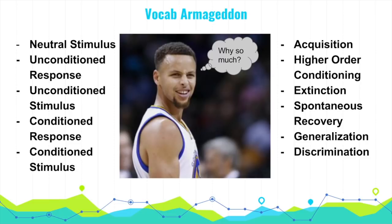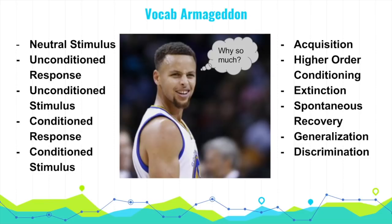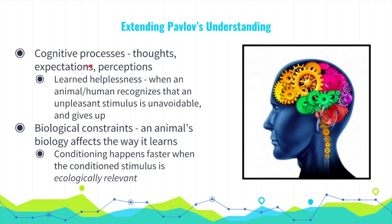Pavlov and Watson actually underestimated the relevance of cognitive processes and biological constraints. Cognitive processes include thoughts, expectations, and perceptions. One term under cognitive processes is learned helplessness — when an animal or human recognizes that an unpleasant stimulus is unavoidable and gives up trying to resist it.